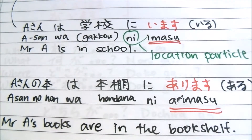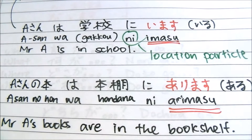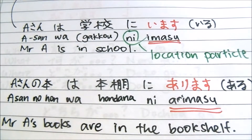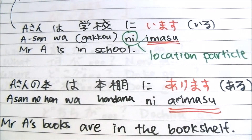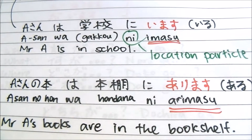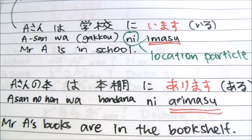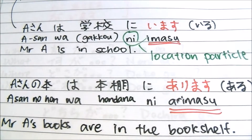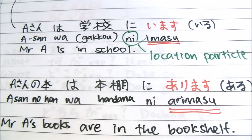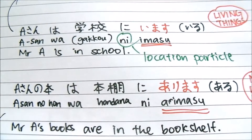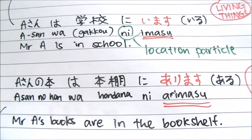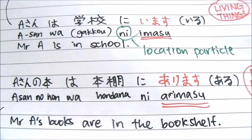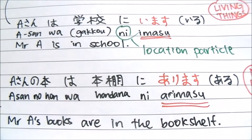Now we have 'A-san no hon wa hondana ni arimasu'. This comes from the word 'aru' — 'arimasu'. Over here you also use the particle 'ni'. So 'imasu' means 'to be' or 'to exist', and 'arimasu' also means 'to exist' or 'there is something there'.